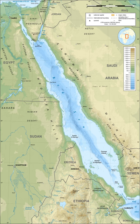Popular tourist resorts include El Gouna, Hurghada, Safaga, Marsa Alam on the west shore of the Red Sea, and Sharm el-Sheikh, Dahab, and Taba on the Egyptian side of Sinai, as well as Aqaba in Jordan and Eilat in Israel, in an area known as the Red Sea Riviera.